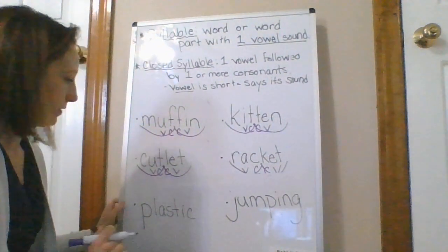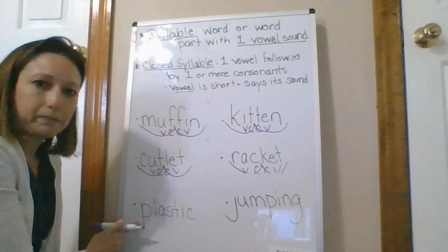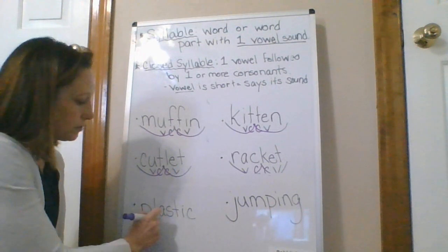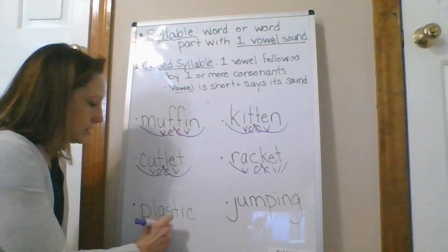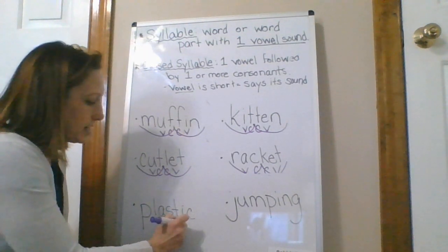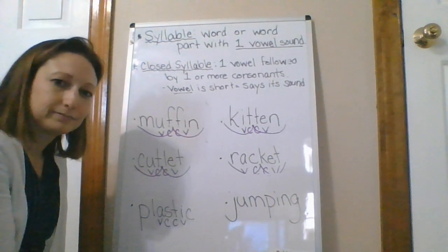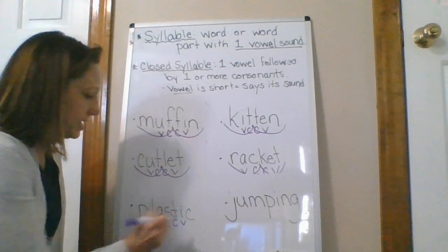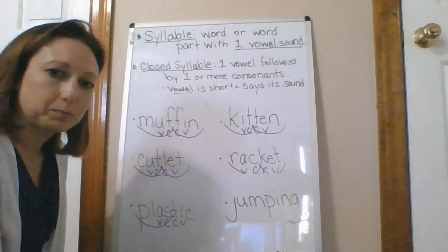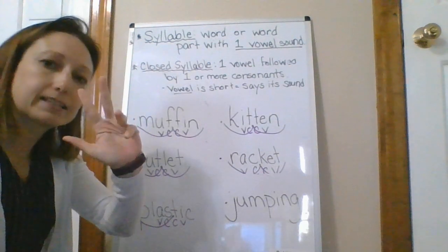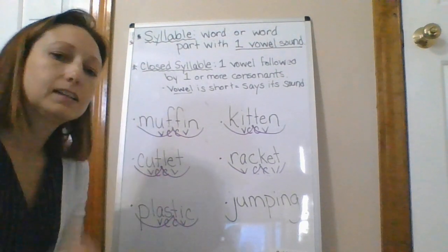Coming back to the next word — it starts with two consonants, the PL blend, but I'm looking for my first vowel. My A is my first vowel, my S is a consonant, T is a consonant, and my I is a vowel. So I divide between the two consonants — between my S and my T. I scoop it. My first syllable is P-L-A-S, 'plas,' and my second syllable is T-I-K — 'plastic.'